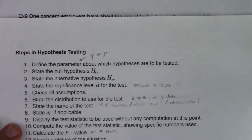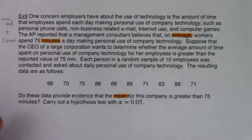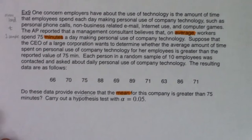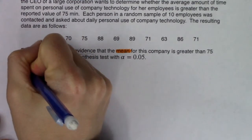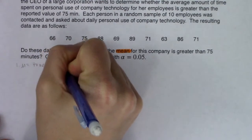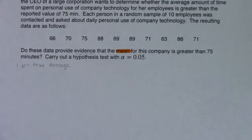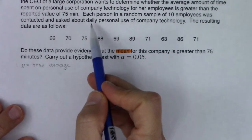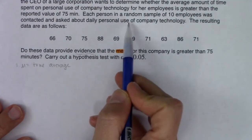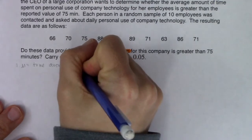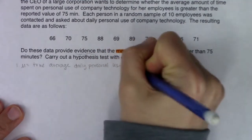Step one: define a parameter. I'm going to choose mu because I'm in mean land. Mu is going to equal the true average daily personal use of company technology — in minutes. That's what we're keeping track of.